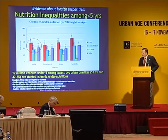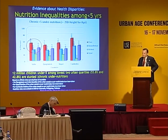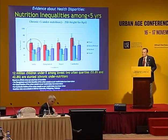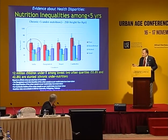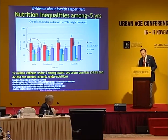These are nutrition inequalities. What this shows is that chronic undernutrition, which is a very important indicator of multifaceted deprivation, is about 53.8% among the poorest quartile based on the wealth index. In the next higher quartile it is 43%. So if you count these children, there are about 12 million children under five in the lowest two quartiles of urban India who are chronically undernourished.